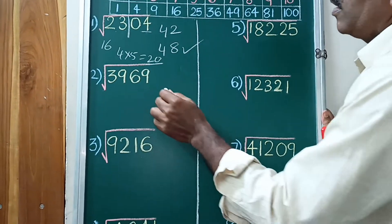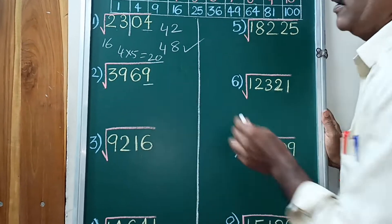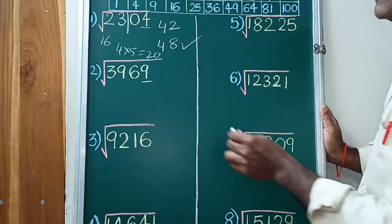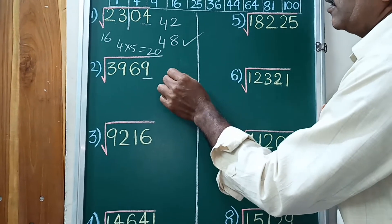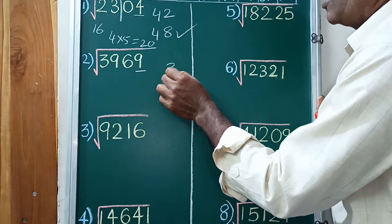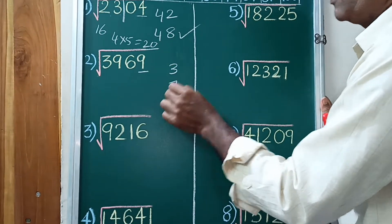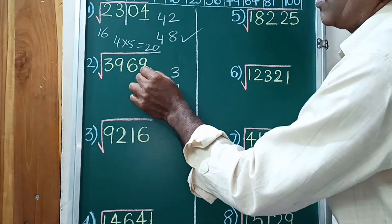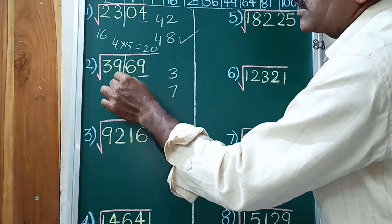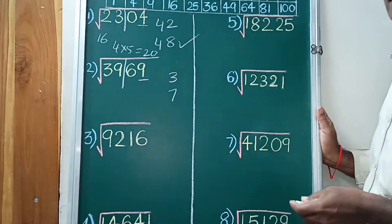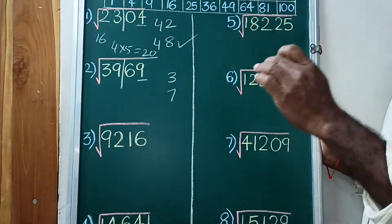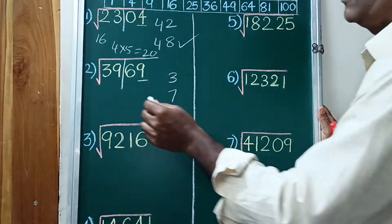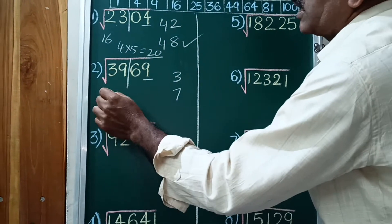Next example: the last digit is 9. For the square root unit place, we want 3, and the complement of 3 is 7. Take 1 and 2 digits — 2 digits after the slash. Before the slash, 39; the nearest square number below is 36.